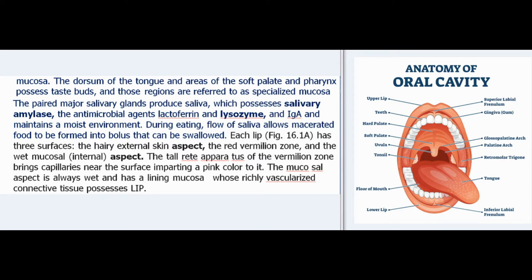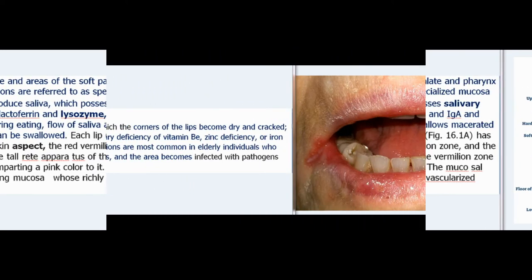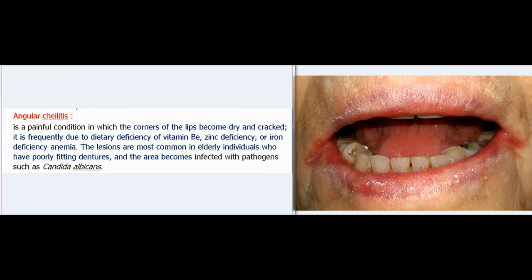The mucosal aspect of the lip is always wet and has a lining mucosa whose richly vascularized connective tissue possesses lip glands. Angular chelitis is a painful condition in which the corners of the lips become dry and cracked. It is frequently due to dietary deficiency of vitamin B, zinc deficiency, or iron deficiency anemia.